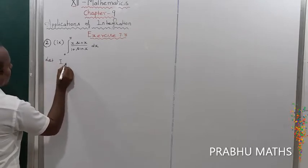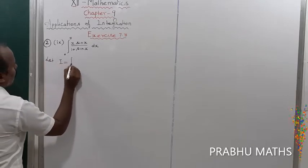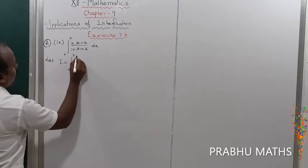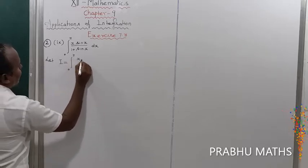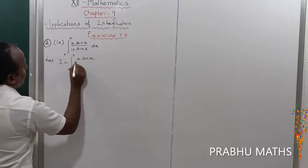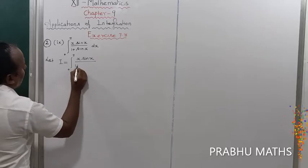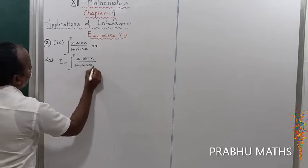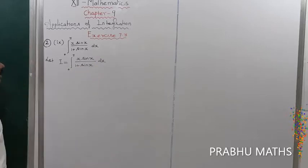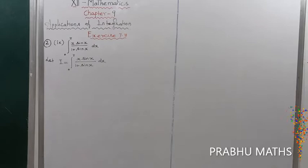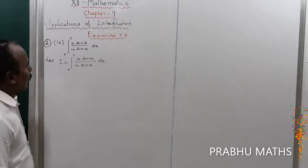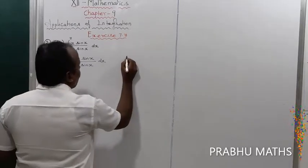The given integral is I equal to integral from 0 to π of x times sin x divided by 1 plus sin x, into dx. By using the formula for the King's property of definite integrals.